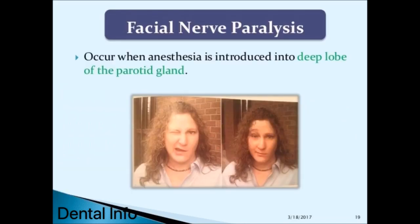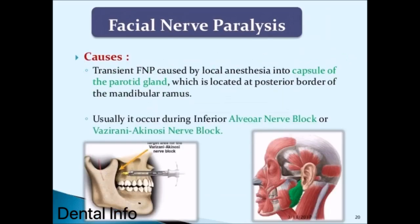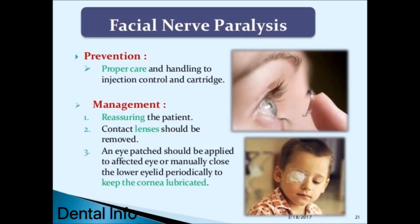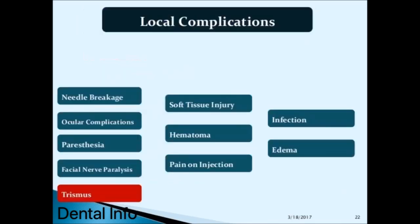Facial nerve paralysis occurs when anesthesia is introduced into the deep lobe of the parotid gland. It is transient and caused by local anesthesia into the capsule of the parotid gland located at the posterior border of the mandibular ramus, usually during inferior alveolar nerve block or Vazirani-Akinosi nerve block. Management: reassure the patient, remove contact lenses, apply an eye patch to the affected eye or manually close the lower eyelid periodically to keep the cornea lubricated.